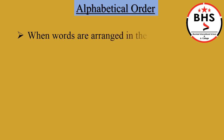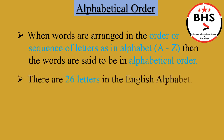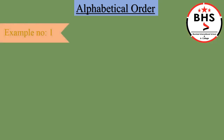Children, our today's topic is Alphabetical Order. When words are arranged in the order or sequence of letters as in alphabet A to Z, then the words are said to be in alphabetical order. There are 26 letters in the English alphabet. The order of the letters is capital A, capital B, capital C, or small a, small b, small c and so on. This is called the alphabetical order. So, in alphabetical order, we are going to arrange the given words alphabetically.